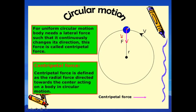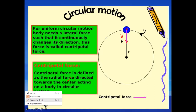If the centripetal force is not acting, no object will undergo circular motion. When the Earth revolves around the Sun, the centripetal force is the gravitational force of attraction which the Sun exerts on the Earth. When the Moon revolves around the Earth, the centripetal force is the Earth's gravitational attraction towards the Moon. Centripetal force is defined as the radial force directed towards the center, acting on a body in circular motion. Without centripetal force, no circular motion is possible. With this, the last topic of this chapter gets completed.